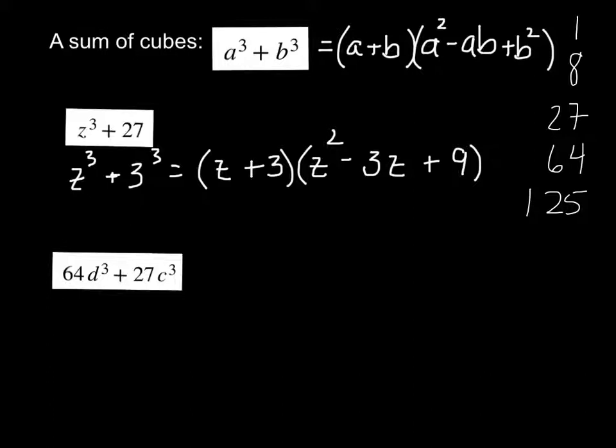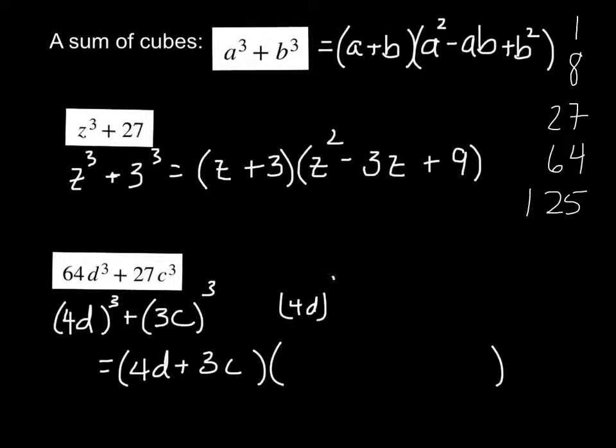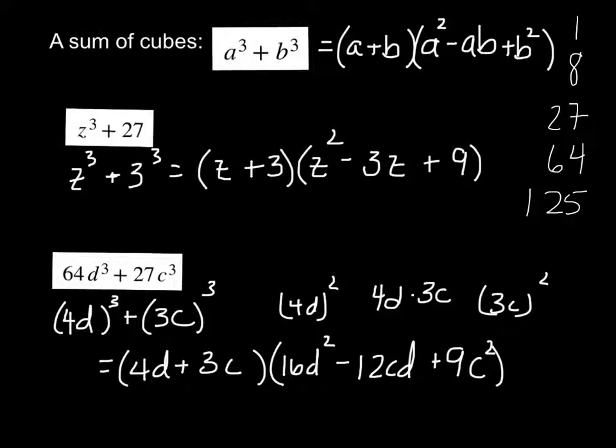Next one. Well what was cubed? Well 64d³, that would be 4d, and 27c³, well that would be 3c. So in the binomial it's 4d + 3c. But in the trinomial it's (4d)², which is 16d², minus 4d times 3c, which gives us 12cd, and then for the last term (3c)², which ends up 9c². And that's it for factoring that sum of cubes.